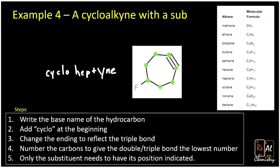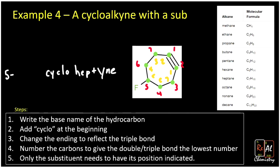Now we want to number the carbons to give the substituents the lowest possible number. We obviously want to prioritize the triple bond, just like we would when naming an alkyne. We have the option of starting the count at one end of the triple bond going one direction — one, two, three, four, five, six, seven — or starting at the other end going the other direction. Notice one and two have to go with that triple bond either way. In this case, we actually tie with both numberings — the fluorine ends up at five either way. So either numbering system gives the same result, and we just need to tell people the fluoro is at the fifth carbon. We tack on '5-fluoro' to the front. Notice we don't need to put a number for where the triple bond is. So we have 5-fluorocycloheptyne.